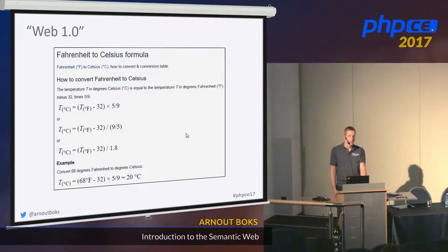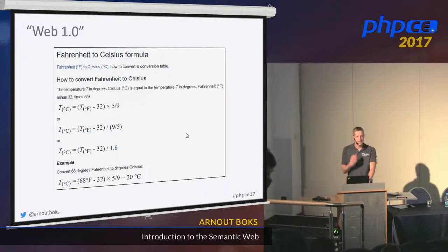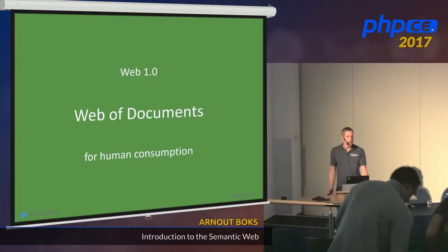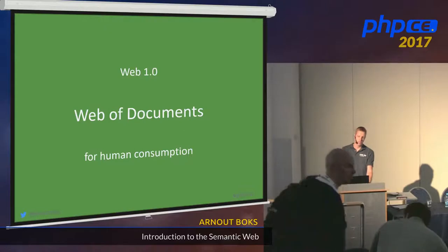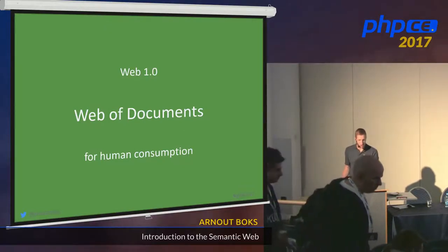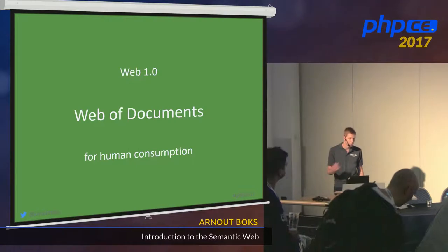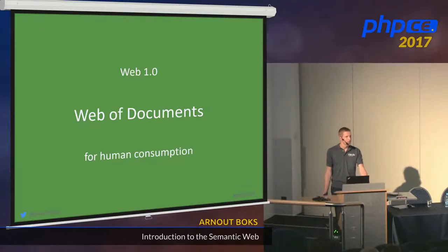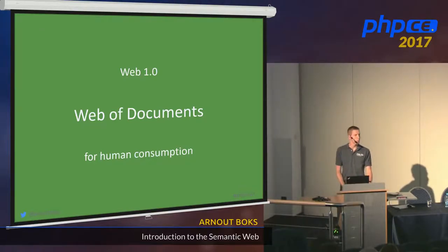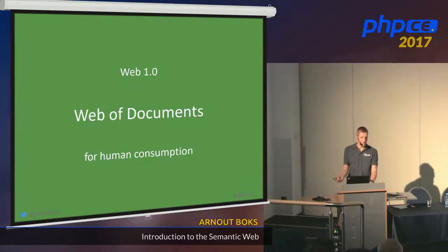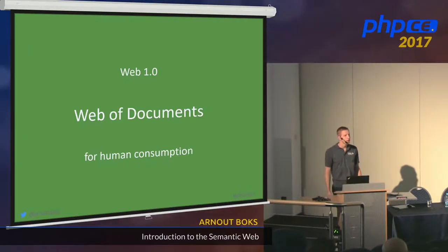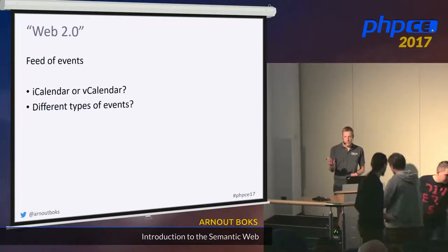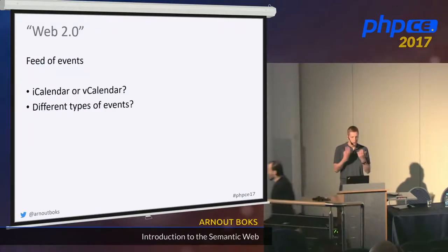86 degrees — that's pretty hot. And then you remember that Americans use some insane system for temperatures, and that you need to convert from Fahrenheit to Celsius. So you look up a conversion formula, plug your values in, and you know what clothes to bring. This is what we call Web 1.0 — it's a web of documents, all just web pages meant for human consumption. You read the data on the web page, combine it with other data, and you interpret it.